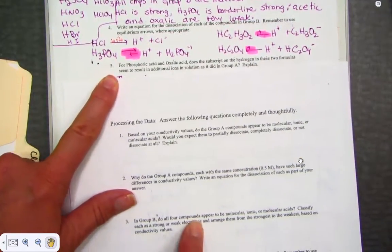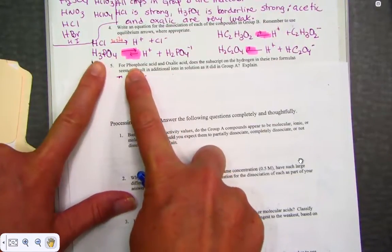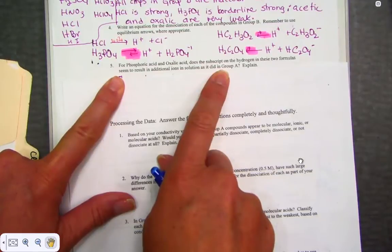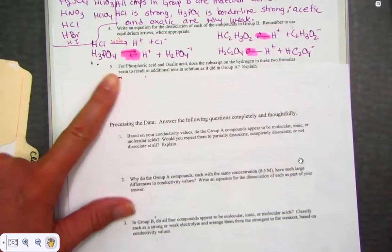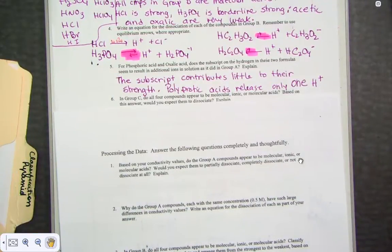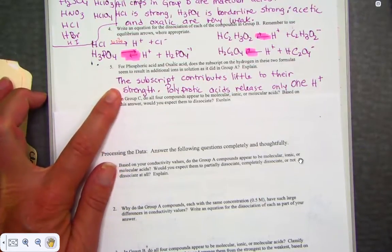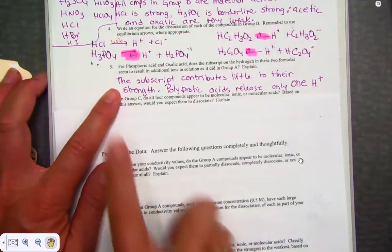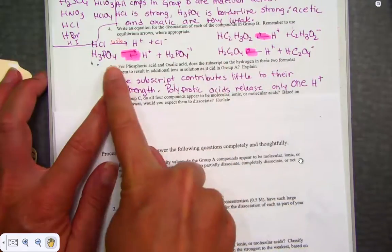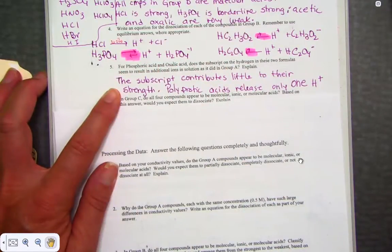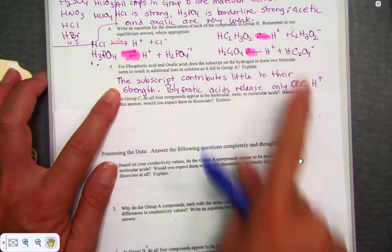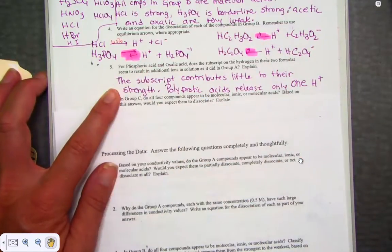Number 5. For phosphoric acid and oxalic acid, this is our tri-protic and our di-protic, does the subscript on the hydrogen in these two formulas seem to result in additional ions and explain? And I just talked about that. We only take one hydrogen ion off only. So the subscript contributes little to their strength. Polyprotic acids only release one hydrogen ion. So to emphasize, the number of ions for strong versus weak, it doesn't matter how many H's they have out front because it only breaks apart into two ions, one positive hydrogen and one negative anion.